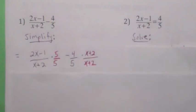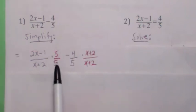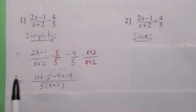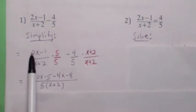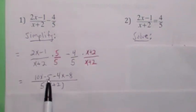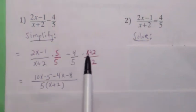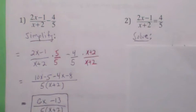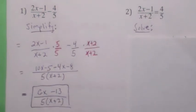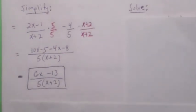To simplify, remember you have to get the LCD, which is going to be 5 times the quantity x plus 2. So the first one gets multiplied by 5 over 5, and the second one gets multiplied by x plus 2 over x plus 2. Carefully, the 5 multiplies the whole quantity so you get 10x minus 5. The negative 4 multiplies the whole quantity so you get minus 4x minus 8. When you combine like terms on the numerator and simplify, you get 6x minus 13 over 5 times the quantity x plus 2.